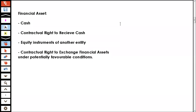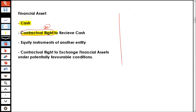Let me explain what exactly is the financial asset from the definition of financial asset. Whenever we talk about the concept of financial asset, the definition is that a financial asset is cash. That's the first thing. And then what happens is it's a contractual right to receive cash. That's a very important point which you need to understand — it's a contractual right to receive cash.